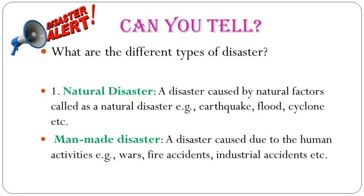What are the different types of disaster? There are two types: natural disaster and man-made disaster. A natural disaster is caused by natural factors — for example, earthquake, flood, cyclone, etc. A man-made disaster is caused due to human activity — for example, wars, fire accidents, industrial accidents, etc.